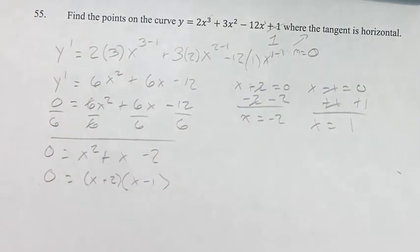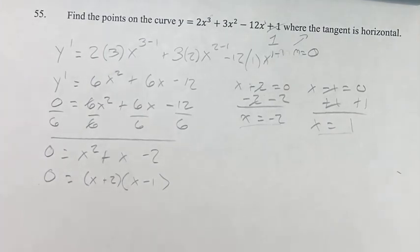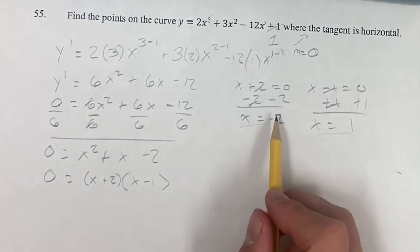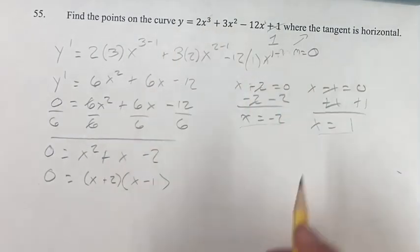So the points on the curve where the tangent is horizontal, these are the x values of those points, but we actually have to find the y values too. And remember, we're not plugging these into the derivative because that's going to find you the derivative. We're going to plug it into the original equation to give you the y value.